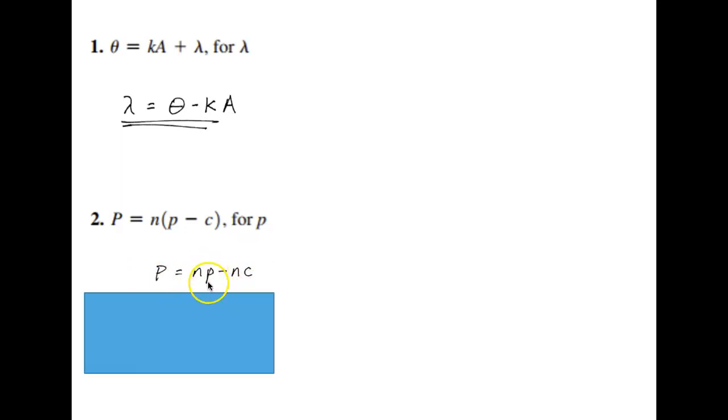But I want to get this lowercase p by itself. And I've got subtracted from it nc. So I need to undo that. And the way I'm going to undo that is to add nc to both sides. So when I add nc, I end up with this. That equals np. And n times p, to undo the n times, we're going to divide both sides by n. I hope this is helpful.